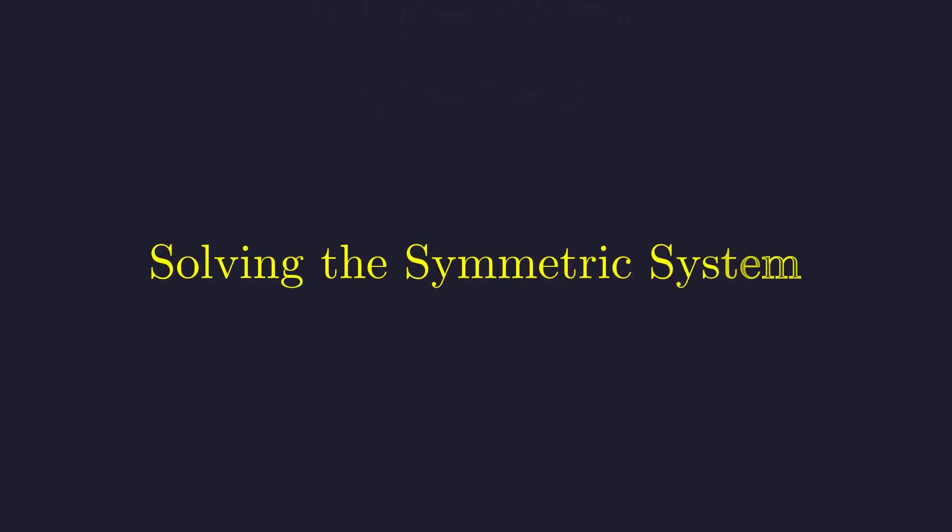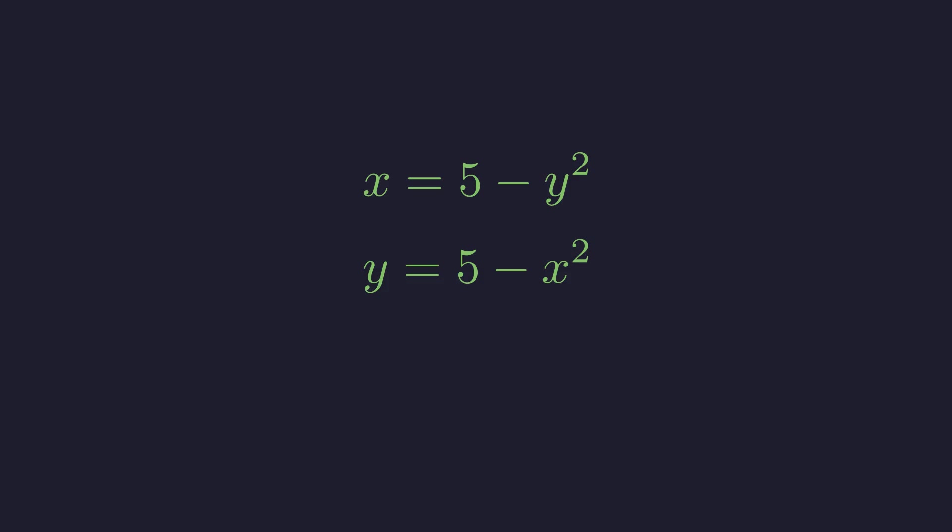Now we have a system of two equations. Notice their beautiful symmetry. Each expresses one variable in terms of the other in the same form. The first equation expresses the variable x in terms of y. The second expresses y in terms of the variable x. This symmetry suggests a powerful technique. Subtract one equation from the other. This often eliminates terms and reveals a simpler relationship.